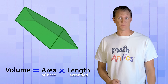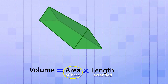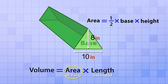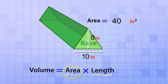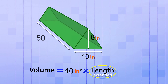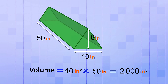Now let's find the volume of the triangular prism. First, calculate the area of the base, which is the triangle. The formula for the area of a triangle is one half of the base times its height — being careful not to confuse the triangle's base with the base of the prism itself. The triangle's base is 10 inches and its height is 8 inches, so one half times 10 times 8 equals 40 inches squared. Multiplying that by the prism's length of 50 inches gives us 2,000 inches cubed — the volume of this prism.